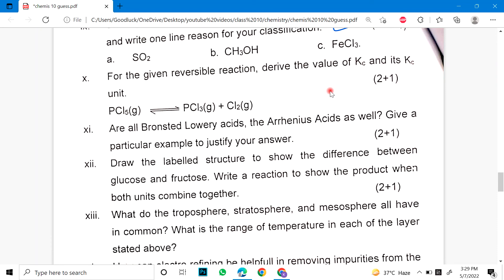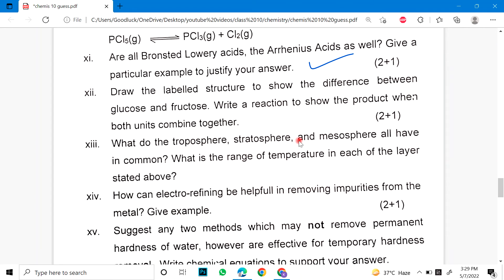For the given reversible reaction, derive the value of Kc and Kc unit. Number 11. Are all Bronsted-Lowry acid the Arrhenius acid as well? Give a particular example to justify your answer. Number 12. Draw the labeled structure to show the difference between glucose and fructose. Write a reaction to show the product when the both units combine together.